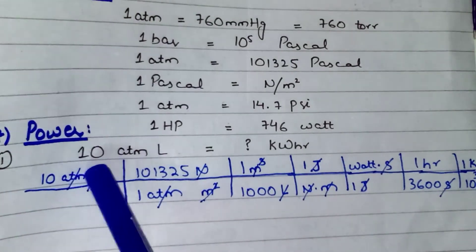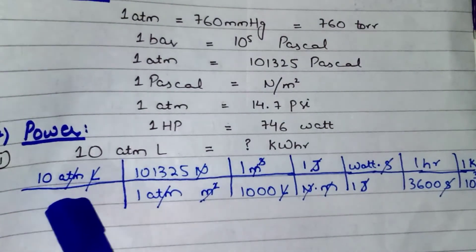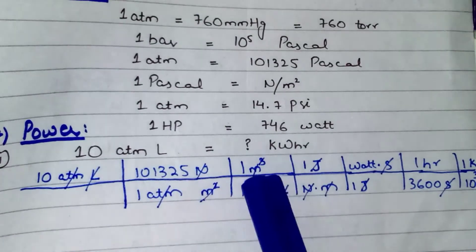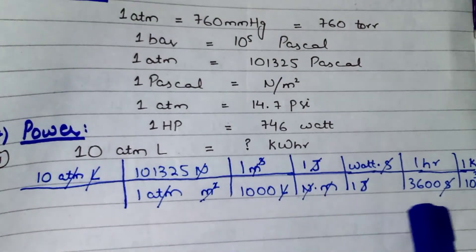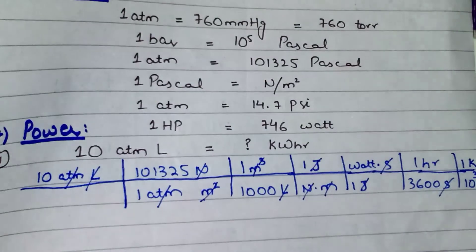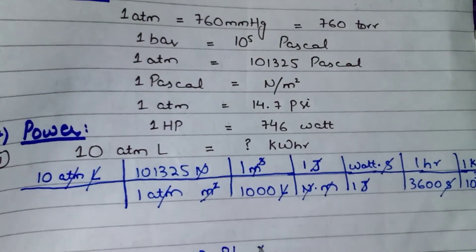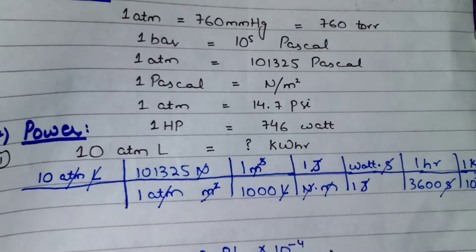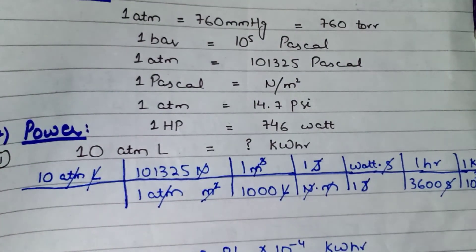So now if we solve: 1 divided by 1000, multiplied by 3600, multiplied by 10 to the power 3 — you will get 2.81 × 10⁻⁴ kilowatt hour. This means that there are 2.81 × 10⁻⁴ kWh in 10 atm·L. Right students, now let's start solving our second question.